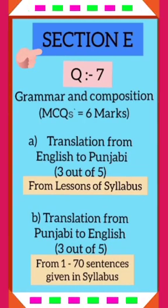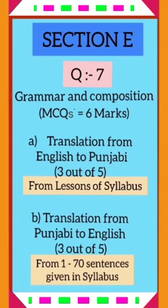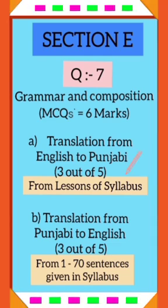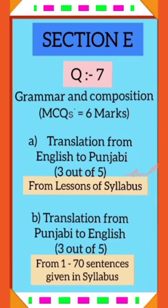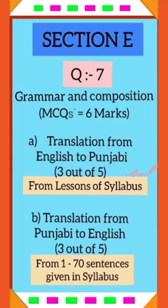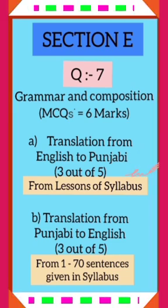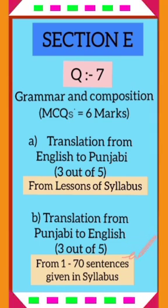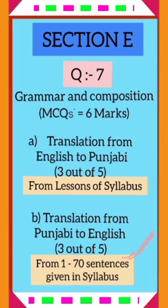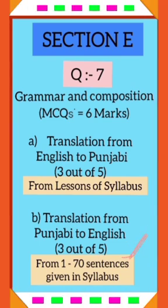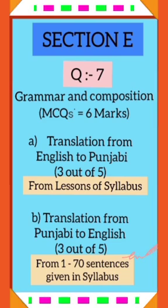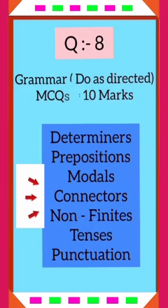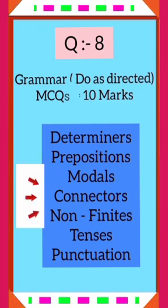Section E will be from grammar and composition. Question 7 will be from English to Punjabi translation from lessons of the syllabus. Part B will be translation from Punjabi to English from sentences 1 to 70 given in the syllabus.